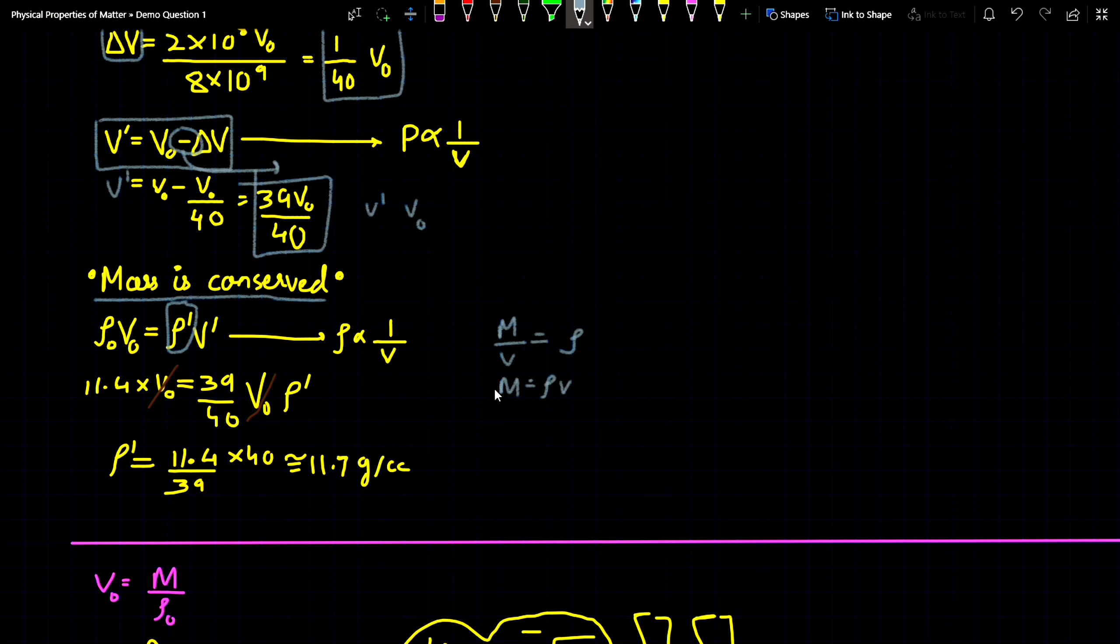Now if you view the value of the mass, you can write that m = ρV. So just put m = ρV which I have put here: ρ₀V₀ = ρ'V'. That is, initial mass is your final mass.